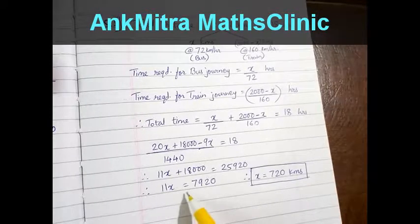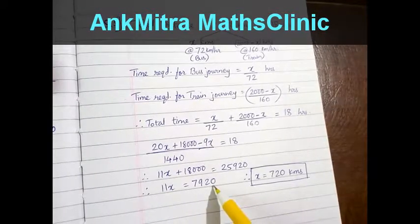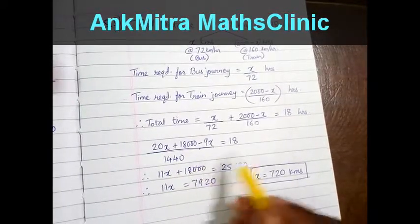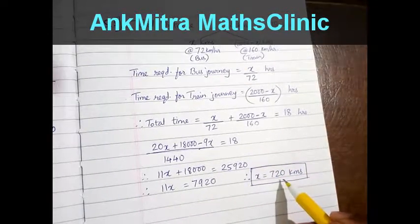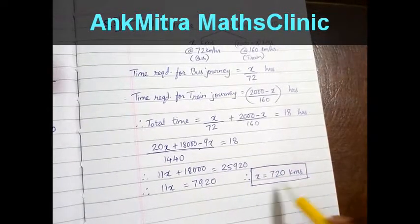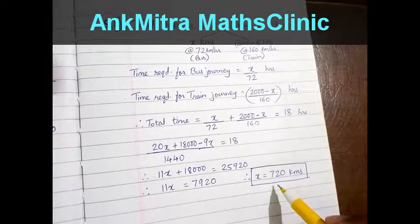Therefore 11x becomes 7920 after taking this number to the other side. Solving this we get x equals 720 km which is the bus journey distance.